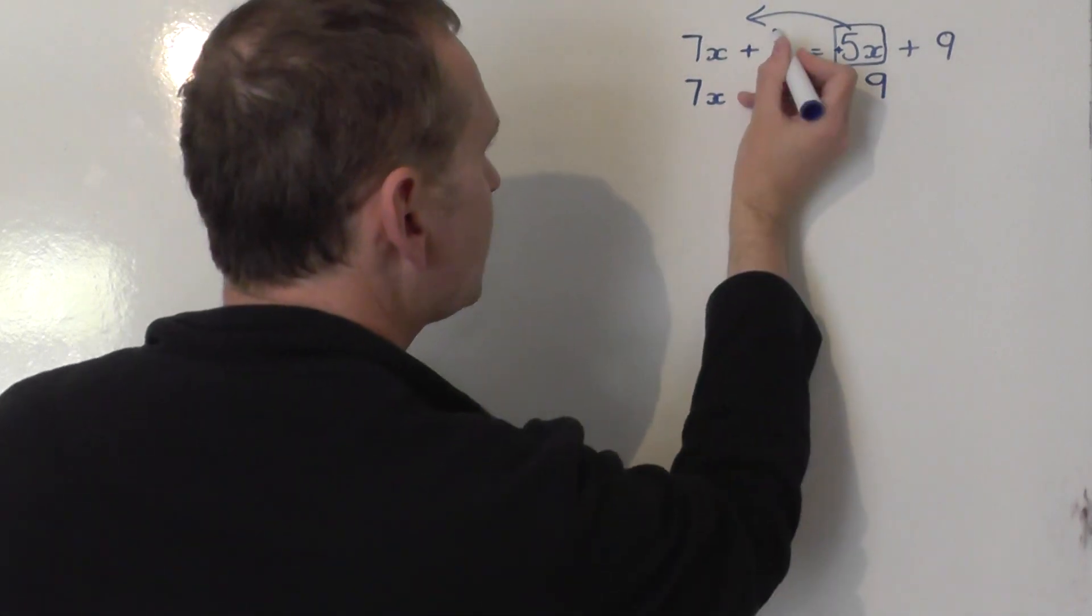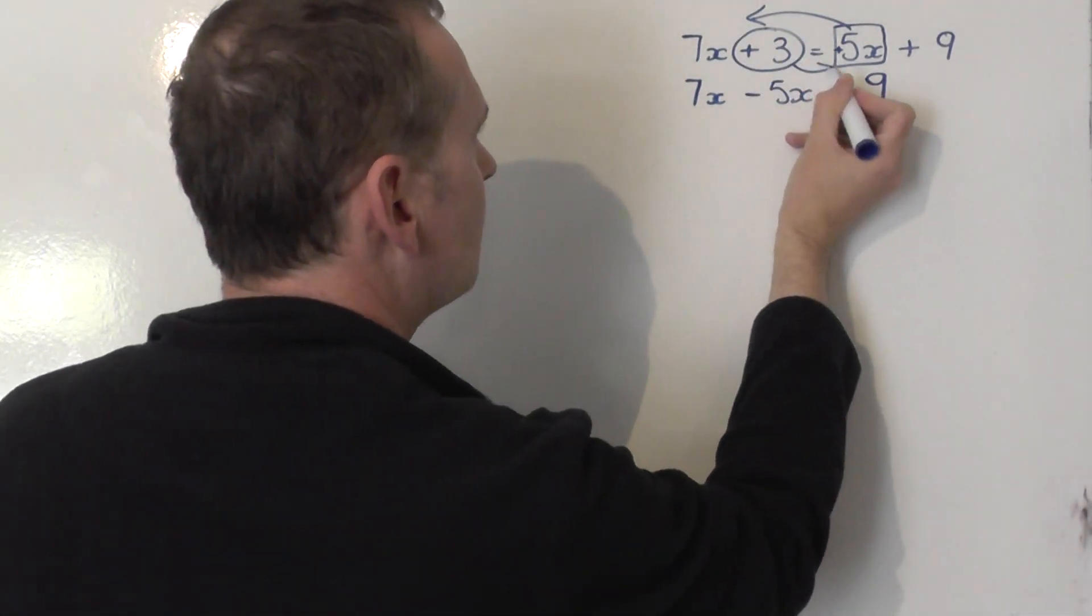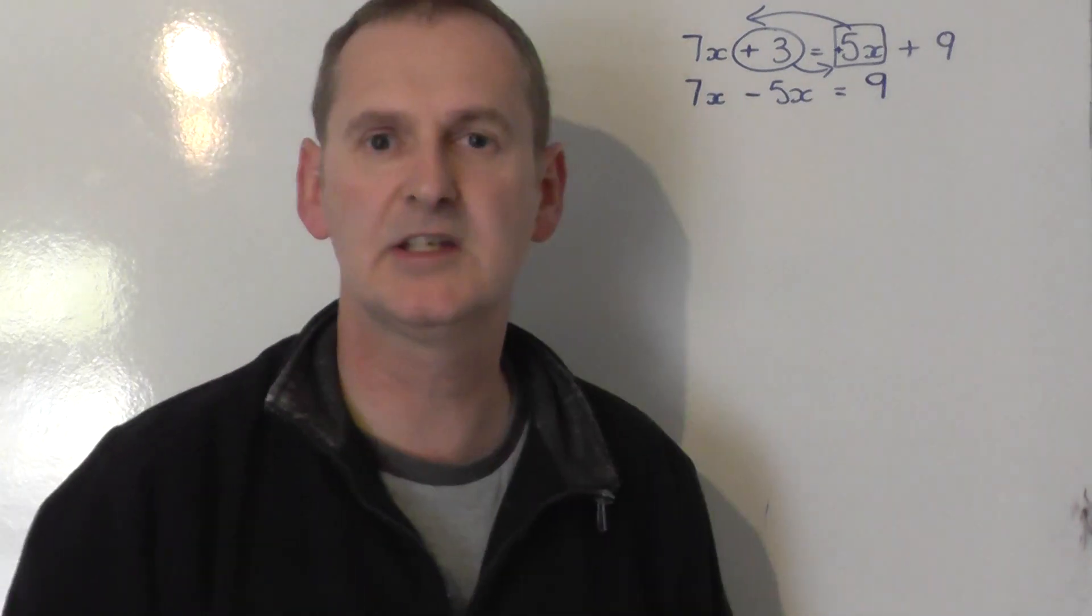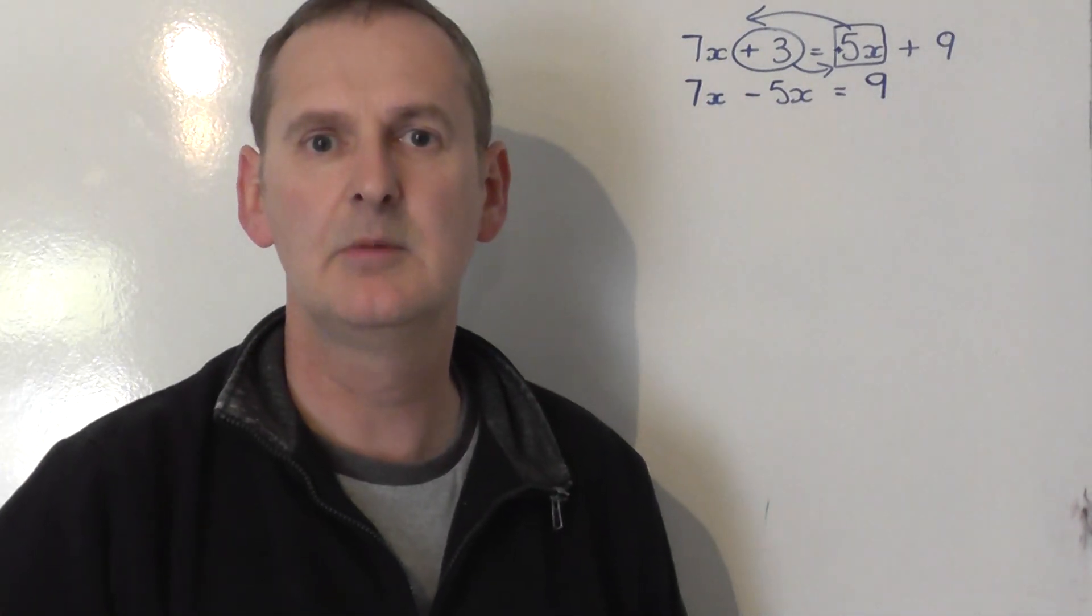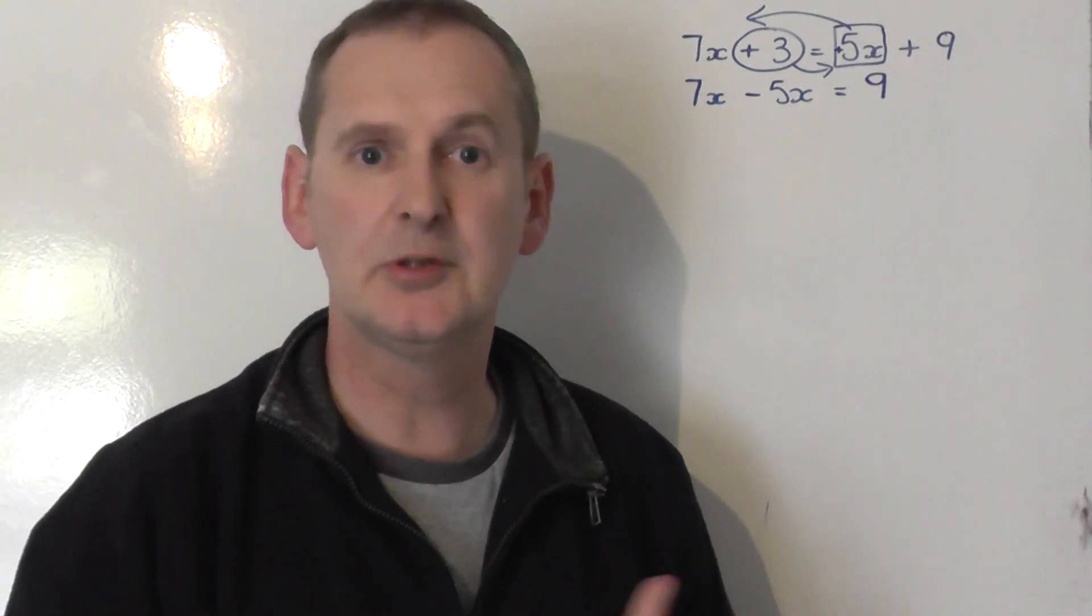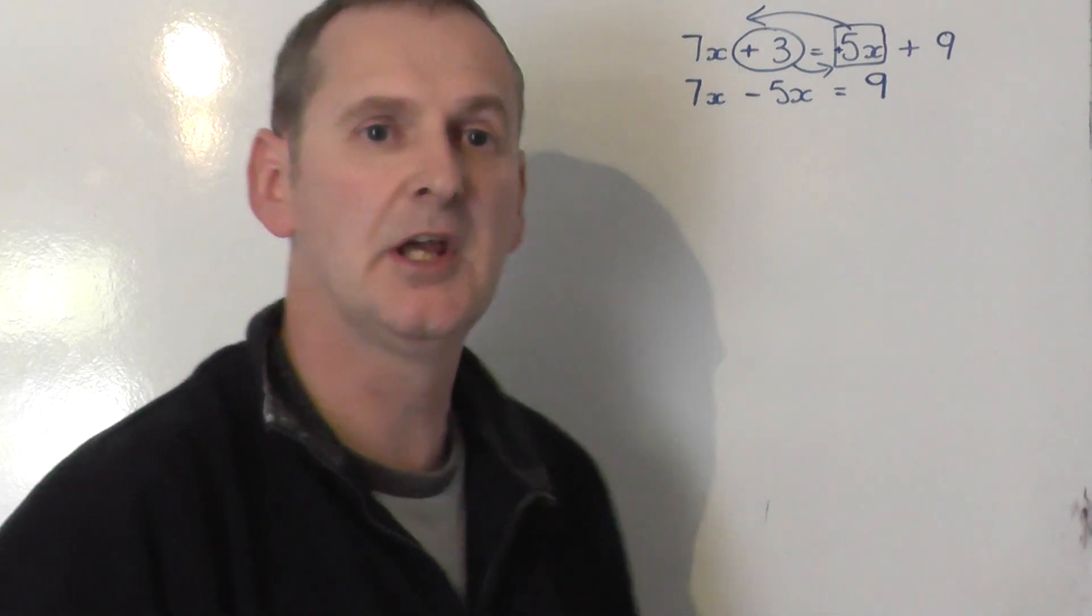Okay, next. The plus 3, that needs to be dragged across from the left-hand side to the right-hand side. It's swapped signs, because it's swapped sides. So, the plus 3 becomes a minus 3 on the other side.